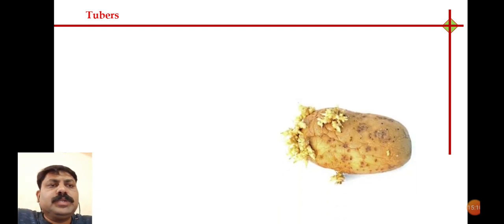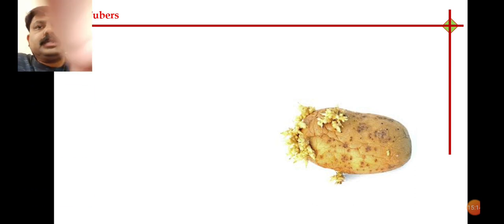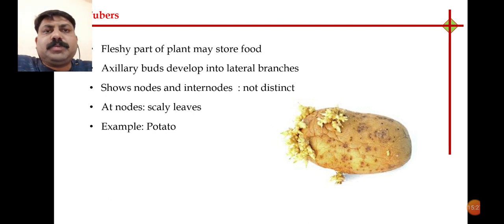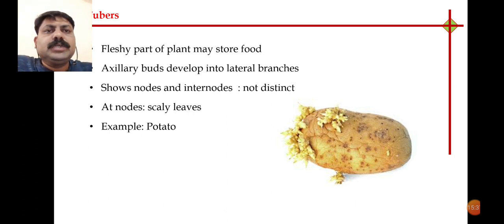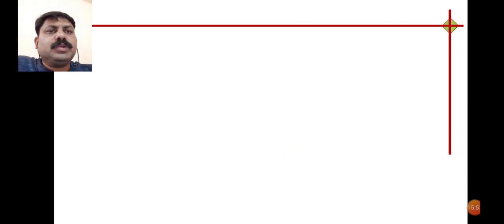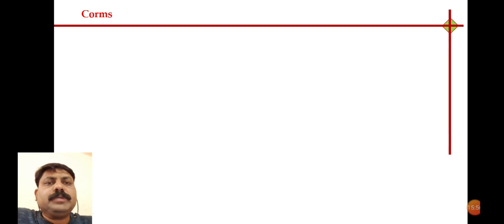The next method is the tuber, with the good example being potato. On potato, we can find nodal regions called eyes, which are used as propagating agents — we cut a piece including the eyes and use it as a propagating agent. The fleshy part of potato is a storage region and source of starch. It shows nodes and internodes that are not distinct, but the nodal region is called eyes; scaly leaves are present at nodal regions, and these are used as propagating agents.